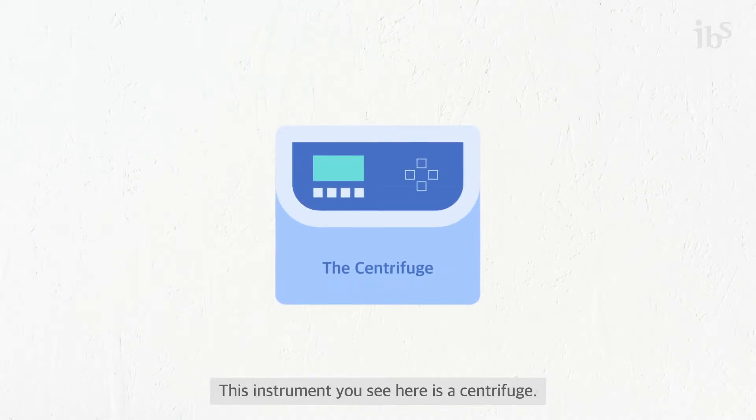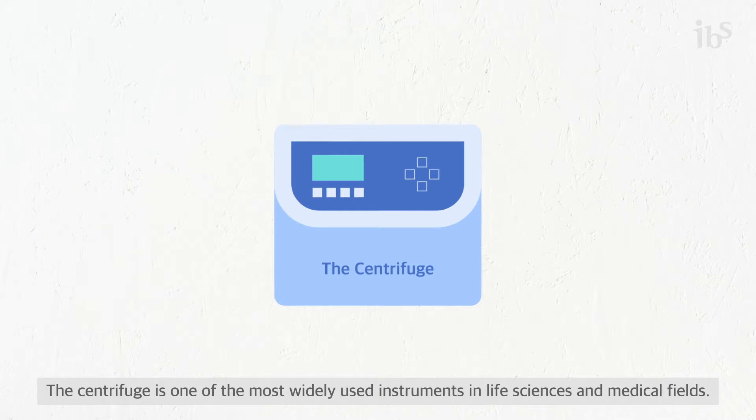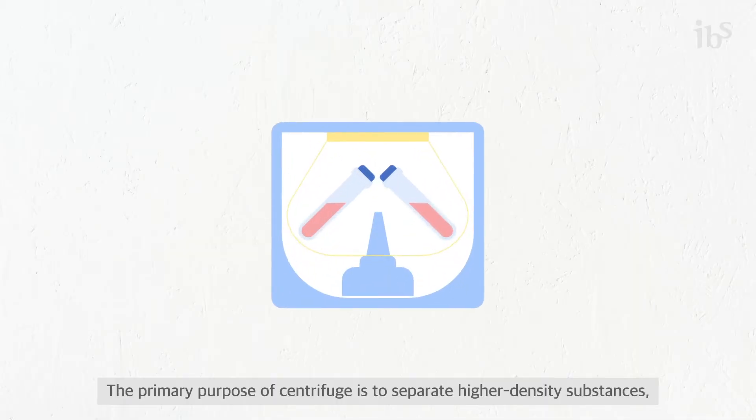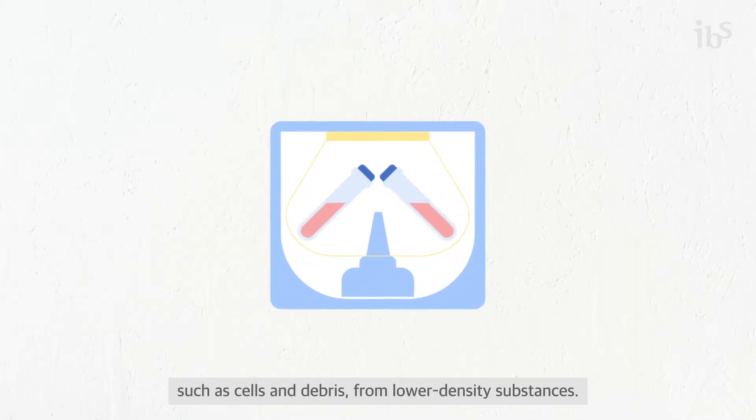This instrument you see here is a centrifuge. The centrifuge is one of the most widely used instruments in life sciences and medical fields. The primary purpose of a centrifuge is to separate higher density substances, such as cells and debris, from lower density substances.